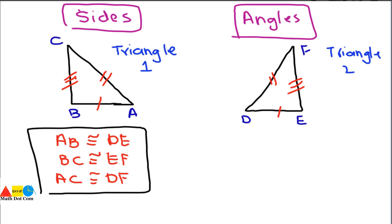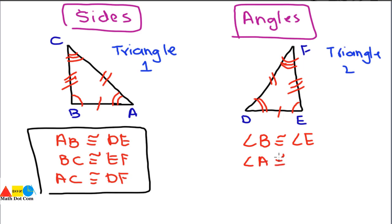These lines show the corresponding sides of the two triangles that need to be compared. For the angles: angle E corresponds to angle B, angle D corresponds to angle A, and angle F corresponds to angle C. So for congruency, angle D must be congruent to angle A, and angle C must be congruent to angle F.